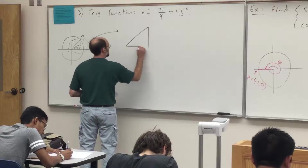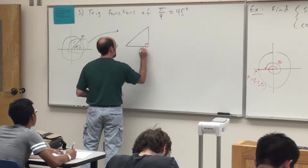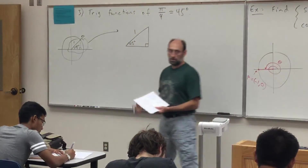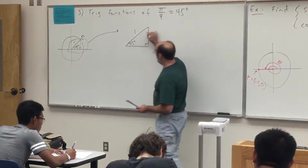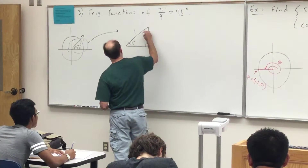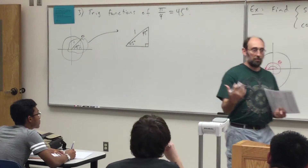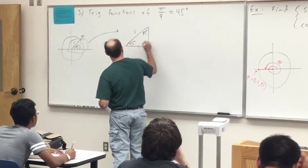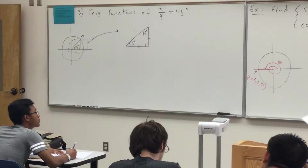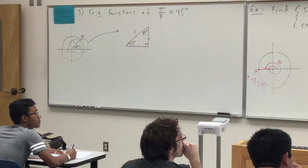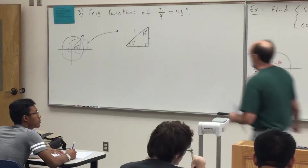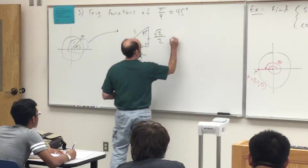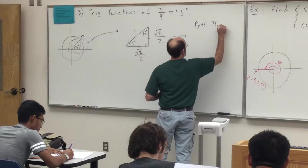We have a special right triangle — a 45-45-90 triangle, or isosceles right triangle. We have a 45 degree angle, a hypotenuse of length 1 (the radius), and the other angle is also 45 degrees. Since the two legs have the same length, it can be shown with the Pythagorean theorem that each of those legs must be root 2 over 2 units long.